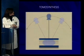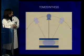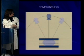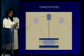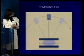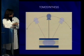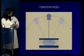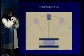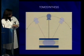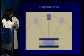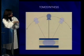Breast tomosynthesis is the first new tool I'm going to speak about. It's essentially a modification of conventional digital mammography, using an x-ray source moving over the breast that is compressed in a craniocaudal or oblique position. We acquire different layers of the breast using the movement of the x-ray source, which can be linear or circular, like in this way.